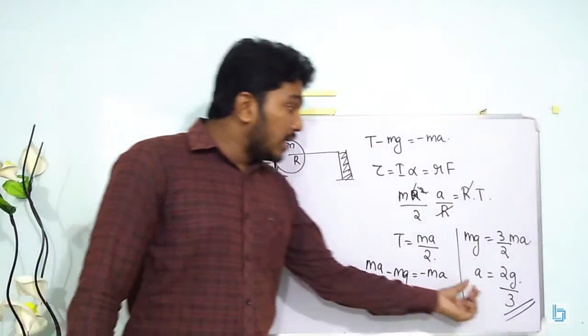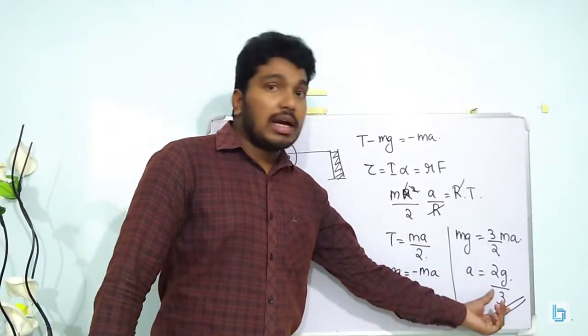So what is the acceleration? A is equal to 2G divided by 3.